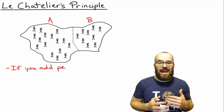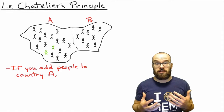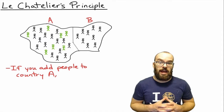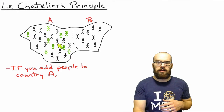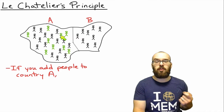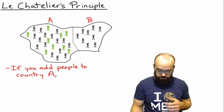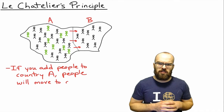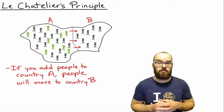If you were to add people to Country A, it's going to start to get really overcrowded. You can see I added some people to Country A and it's getting overcrowded. What's going to happen? People are going to move from Country A over to Country B, because there's a lot more room there.